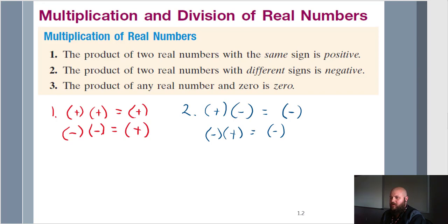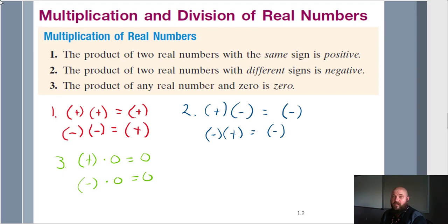Rule 3: the product of any real number and 0 is 0. Any number, whether it's a positive or a crazy negative number — simple or wild — if you multiply it times 0, it will give you 0.